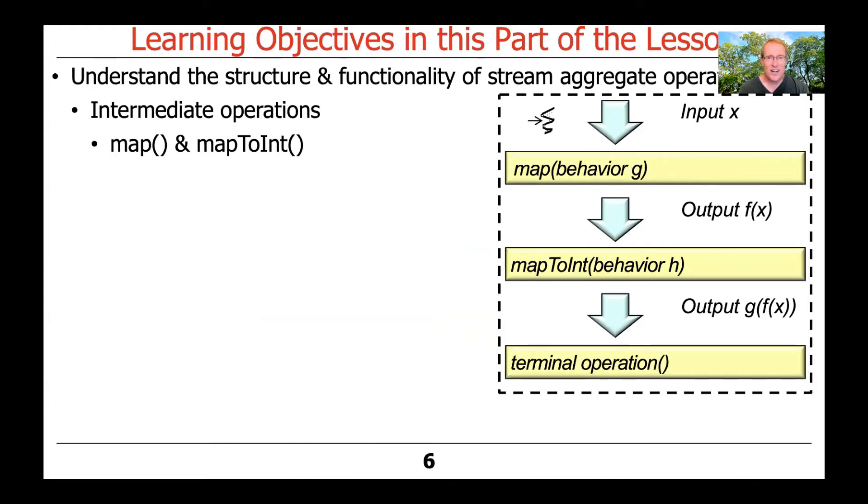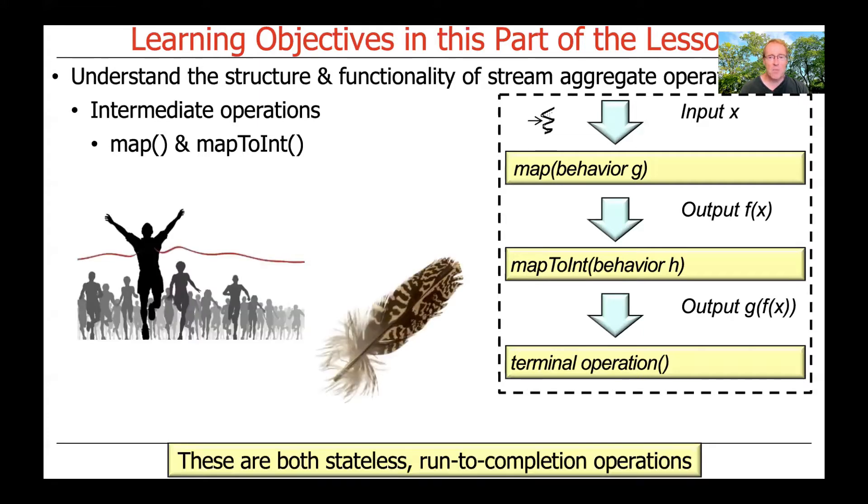The particular intermediate operations we're going to focus on right now are some of the most popular ones, in particular the map operation, and then there's a variant of map that works on so-called primitive types called mapToInt. Both of these operations are stateless, meaning that they don't have to consider what's come before or after. They just take a look at each element in the stream as it goes whizzing by the behavior.